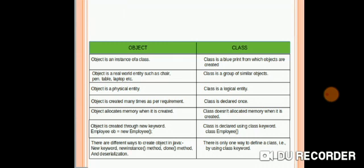Let us see the difference between an object and a class. An object is an instance of a class, whereas a class is a blueprint from which objects are created. An object is a real-world entity such as chair, pen, table, laptop, etc., whereas a class is a group of similar objects. An object is a physical entity whereas a class is a logical entity. An object is created many times as per requirement, and a class is declared once. An object allocates memory when it is created; a class does not allocate memory when it is created.